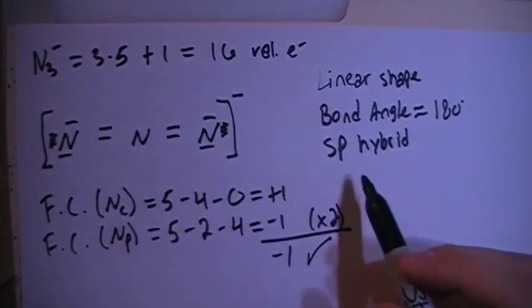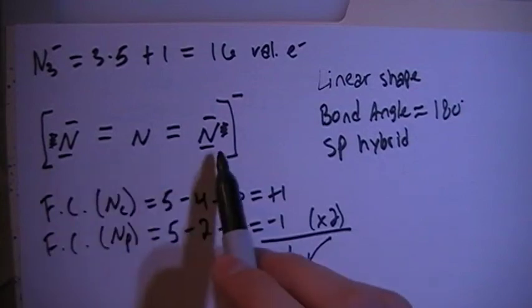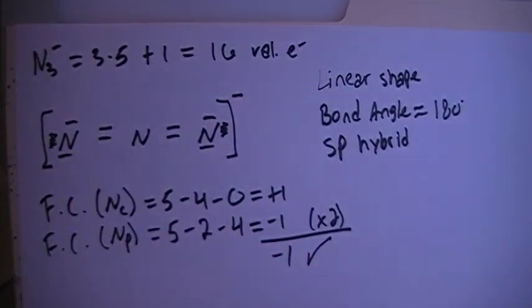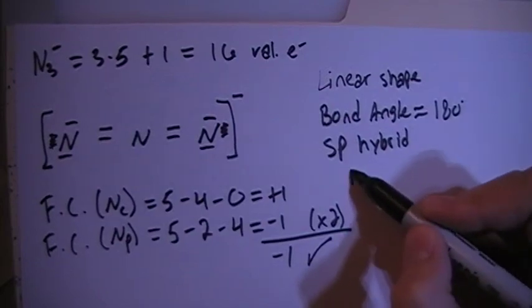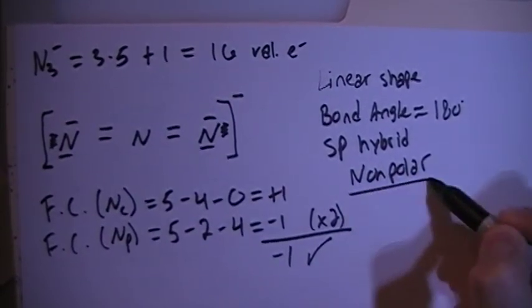But typically you talk about the central atom in these Lewis dot structures. And because all 3 of these are nitrogens, these 2 will cancel each other out in terms of net dipole moment, meaning that this is going to be a non-polar ion.